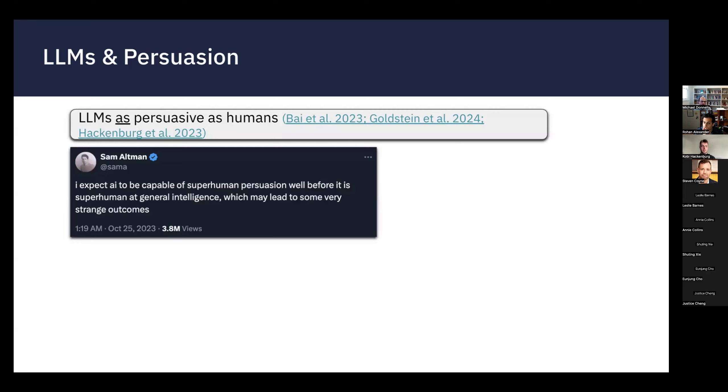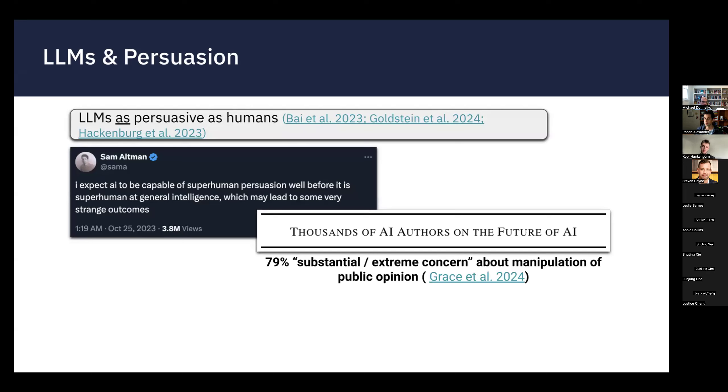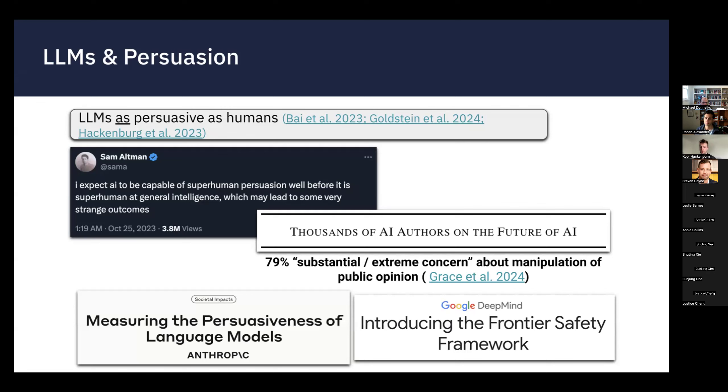There's been work by myself and some others that sort of directly looking at how persuasive these models are, and pretty conclusively shown that these models can persuade at the level of humans, at least, on most political issues. And there's been commensurate speculation from industry leaders. This concern about these language models manipulating public opinion has taken root in the community of AI researchers to the point where most of them rank large scale manipulation of public opinion as among their top concerns about these generative language models.